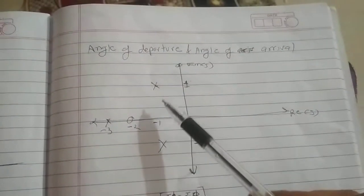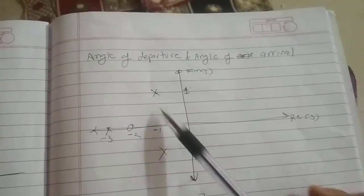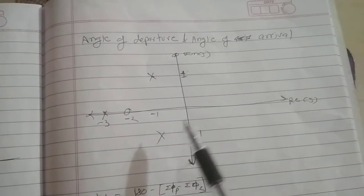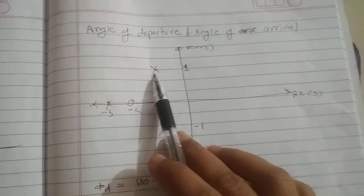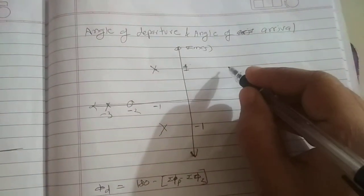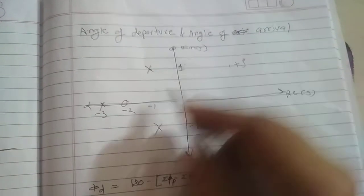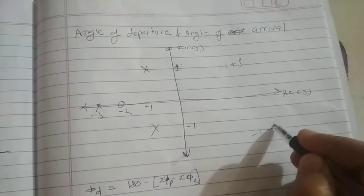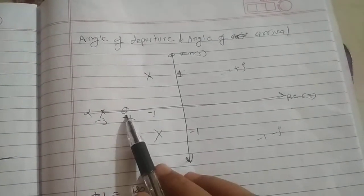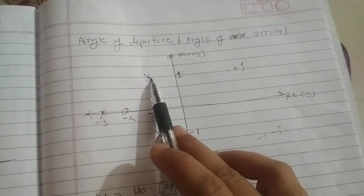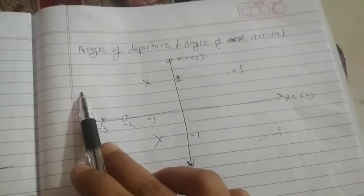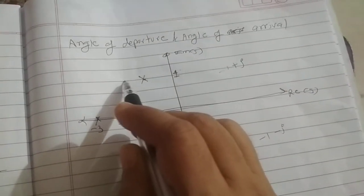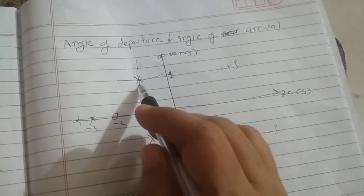Here there are two complex poles. I am just giving you the concept in this video. Suppose there is a complex pole with value minus 1 plus j, and this pole has the value minus 1 minus j. Root locus starts from the pole and ends at the zero, or starts from the pole and ends at infinity. So if this is a complex pole, then root locus starts from the pole.